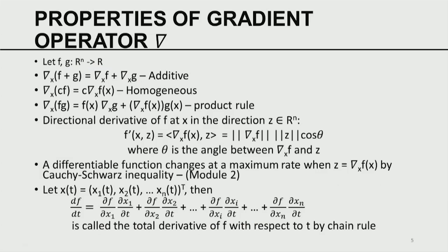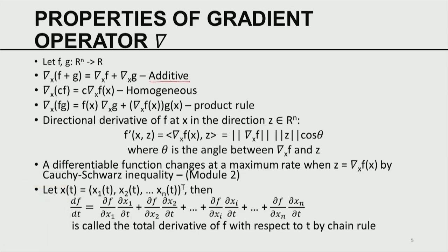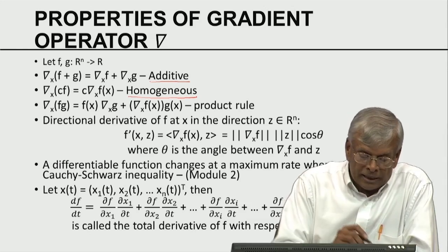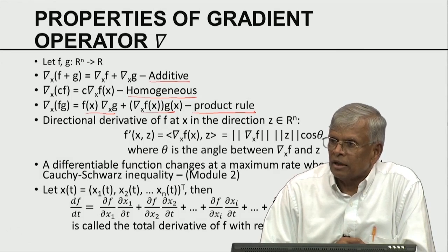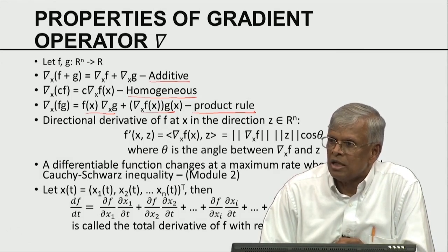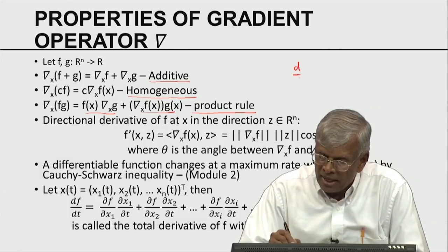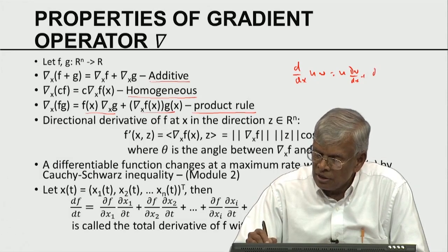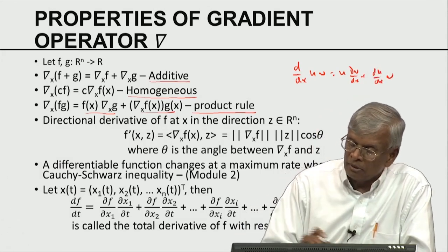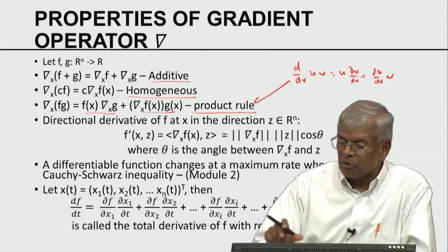The gradient operator nabla has many interesting properties. Let F and G be scalar-valued functions. The gradient of the sum is the sum of the gradients — gradient is additive. The gradient of a constant times a function equals the constant times the gradient — that is the homogeneity property. The gradient of a product follows a product rule, which is the extension of the univariate product rule d/dx(uv) = u·dv/dx + v·du/dx to multivariate calculus.